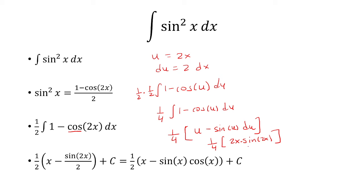Now, notice here that sine of 2x is the same thing as 2 sine x cosine x. So I have 1 fourth, 2x minus 2 sine x cosine x.